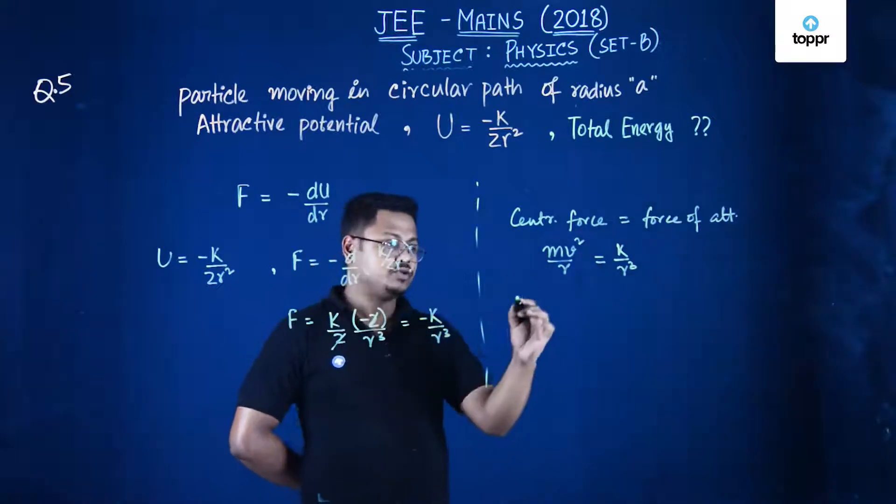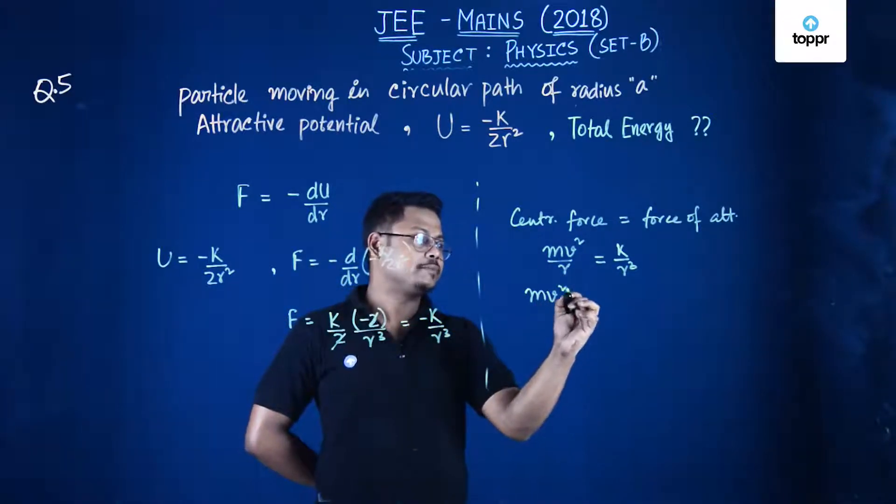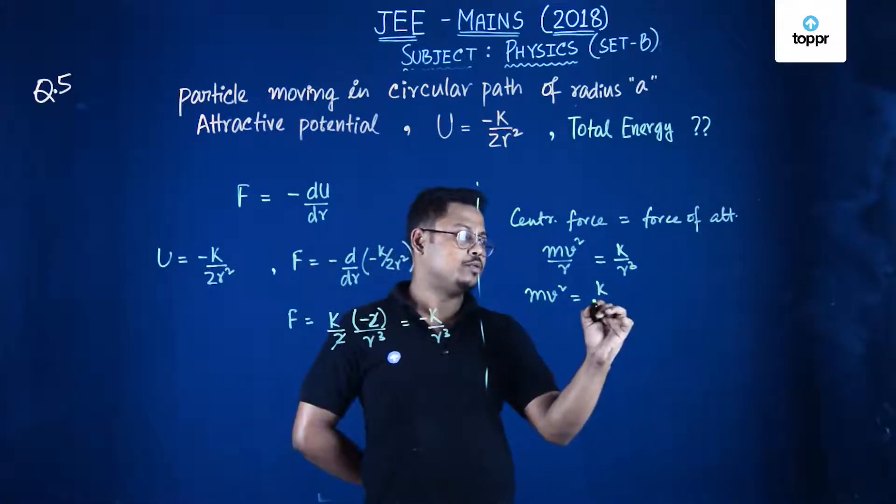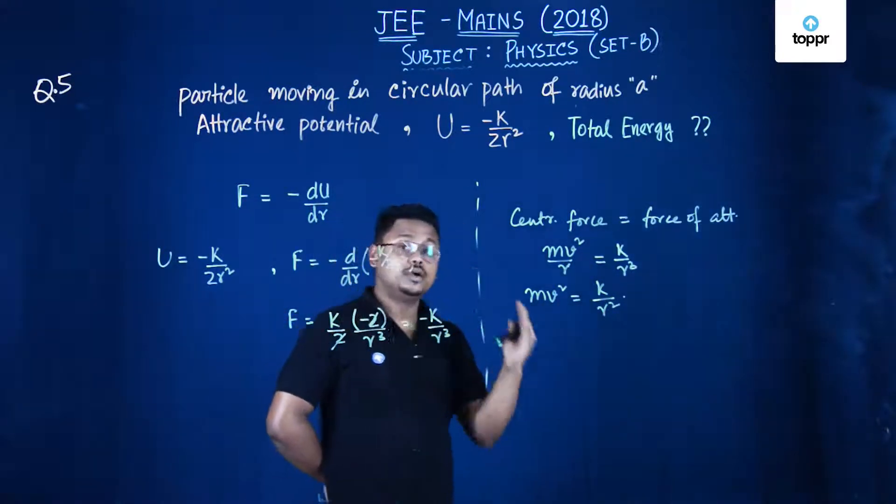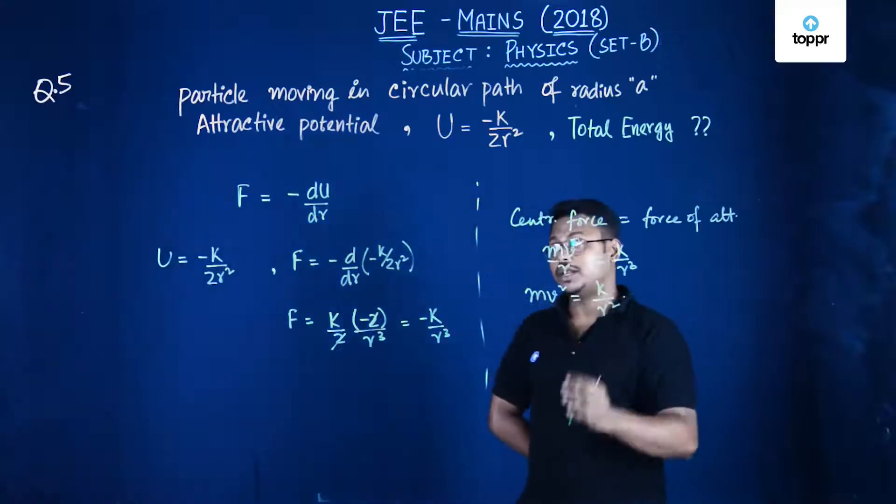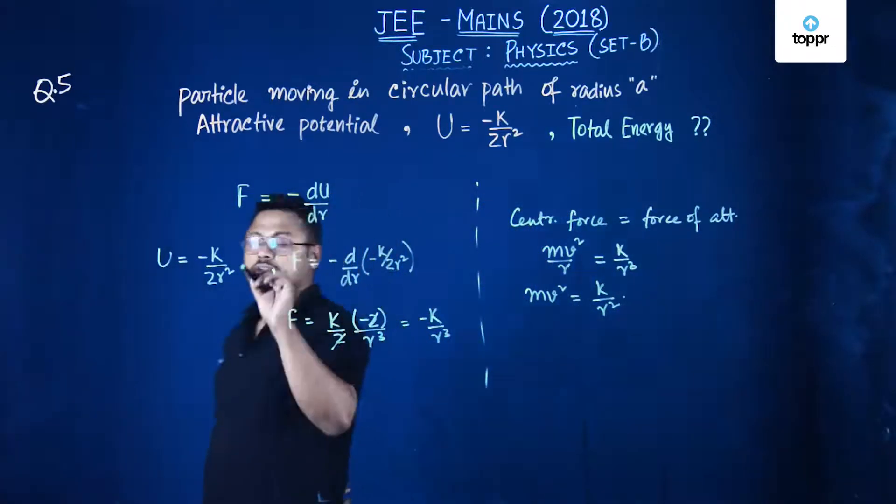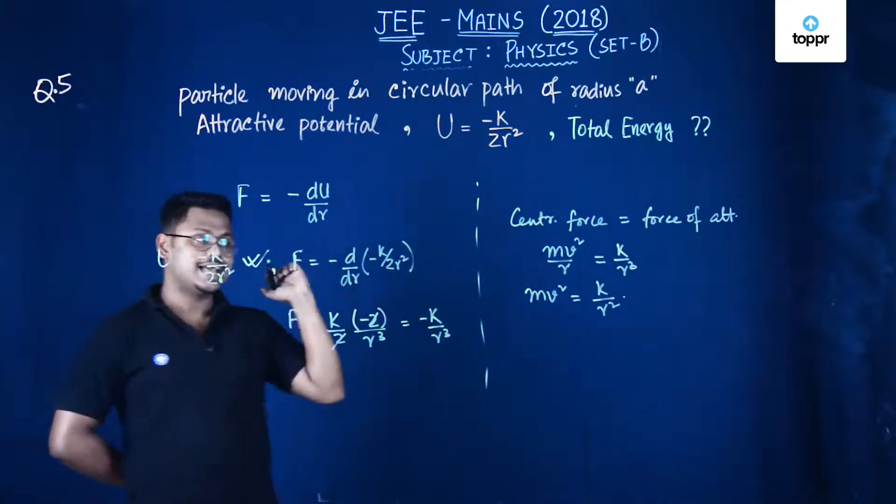From this expression we got the value of mv square equals k upon r square. Now we know the total energy must be equal to kinetic energy plus potential energy. So potential energy is given. You have to find the kinetic energy.